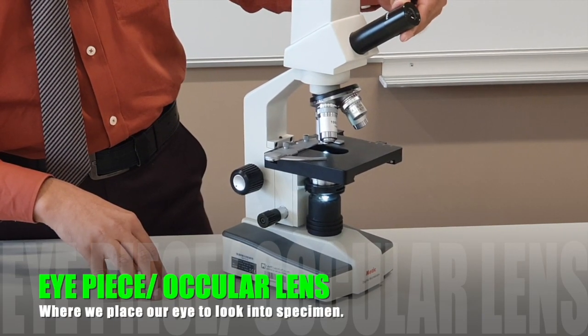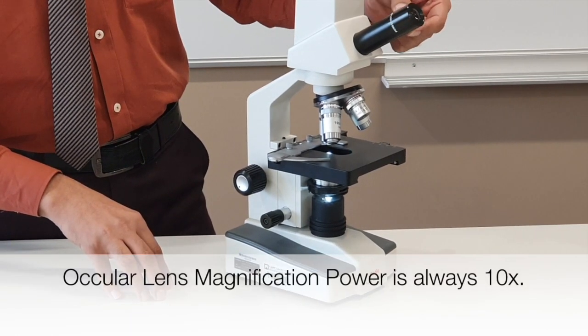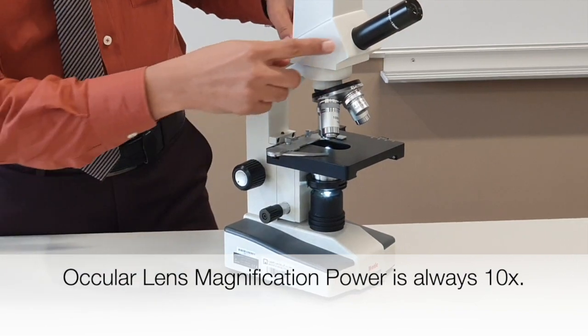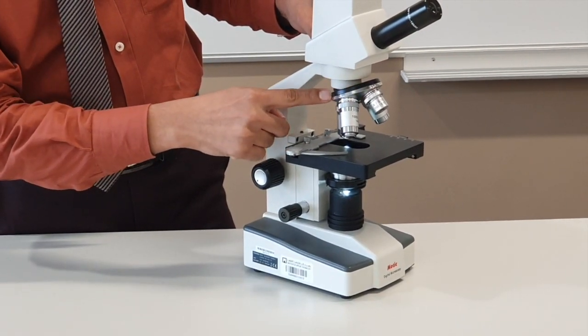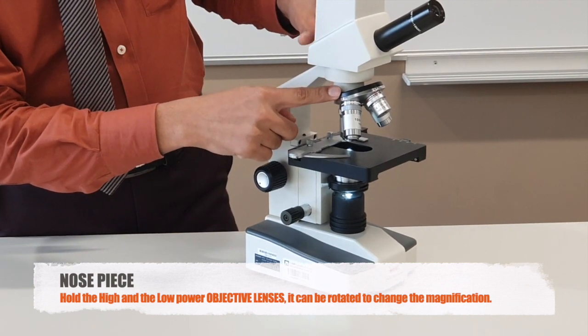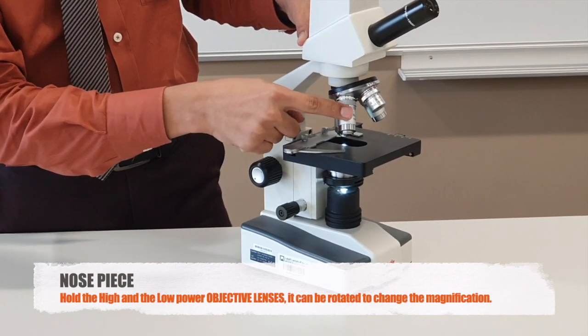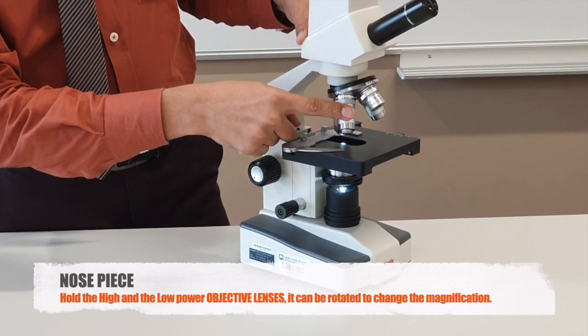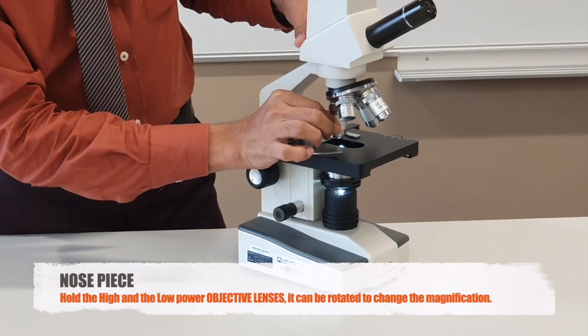The first one is the eyepiece or ocular lens. The most important thing, remember the magnification power is 10x. Then this round or circular shape is the nose piece. The nose piece is connected with two or three different lenses which are called objective lenses. The objective lenses are of high and low power.